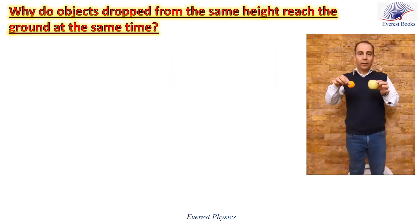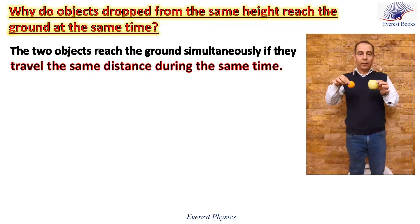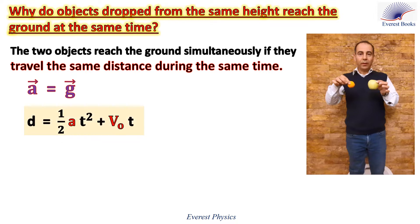Why do objects dropped in air from the same height reach the ground at the same time? The two objects reach the ground simultaneously if they travel the same distance during the same time. If we neglect air resistance, the acceleration of any object moving in air is equal to the gravitational acceleration, and this acceleration is constant. Then the expression of the distance is given by ½at² + V₀t. The two objects will travel the same distance during the same time if they have the same initial velocity and the same acceleration, and this is the case. The two objects are released from rest and they move with the same acceleration.